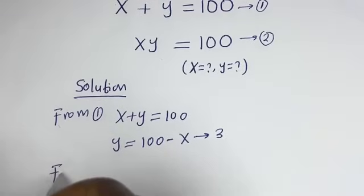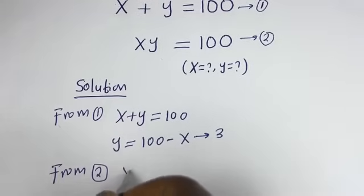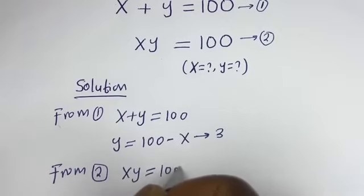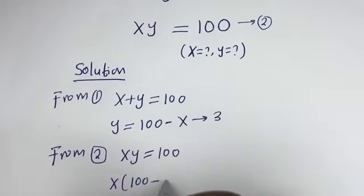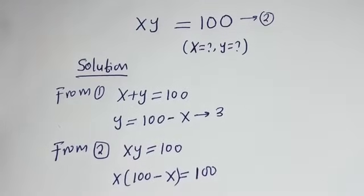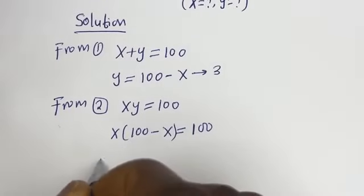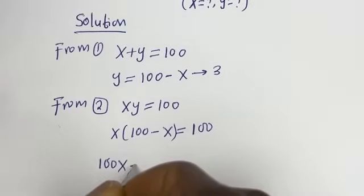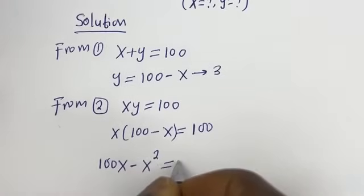From equation 2, xy is equal to 100. We can substitute for y: we have x(100 minus x) is equal to 100. Let's open the bracket: x multiplied by 100 is 100x, minus x multiplied by x gives x squared, so 100x minus x squared is equal to 100.